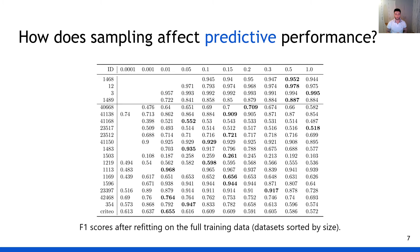We first look at the effect that downsampling has on predictive performance and execute the AutoML search with an execution budget of five minutes per cross-validation fold. Our results show that downsampling can actually improve performance compared to performing AutoML search on the full dataset. Only two datasets achieved their best scores when using the full training fold. There is a clear divide between small datasets with less than 10k samples and large datasets with 50k to 1 million samples. For the small datasets, three out of four perform best with a downsampling ratio of 0.5.